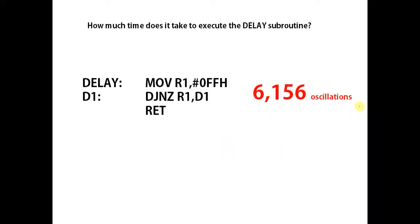How much time is that? One period is equal to 1 over the system frequency. Total time taken will be 6156 multiplied by the period.